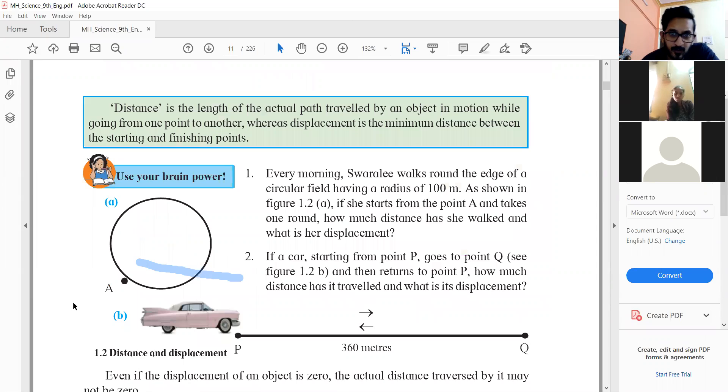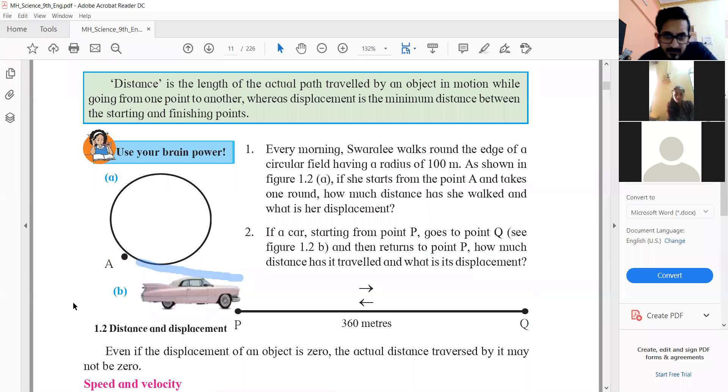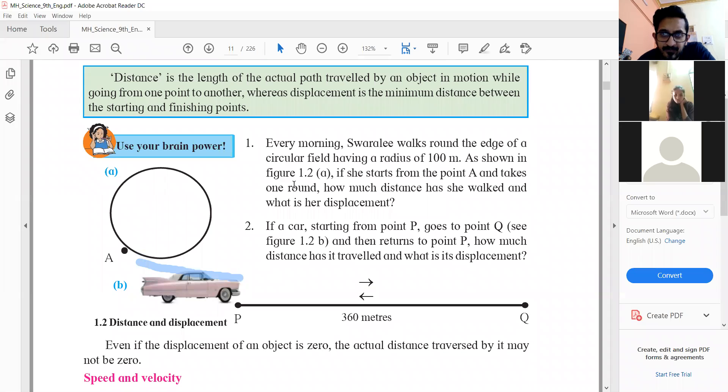So yesterday also we saw one example. Suppose every morning Swarali walks around the edge of a circular field, imagine that it is a circle, its radius is 100 meters. And if she starts at a point A and takes one round, how much distance she has covered and what is her displacement? Can you solve this? I will just take a pause.